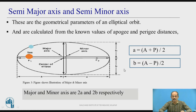Semi-major axis is equal to (capital A plus capital P) divided by 2, where capital A is the apogee and capital P is the perigee. Similarly, the eccentricity-related term can be calculated as (A minus P) divided by 2.